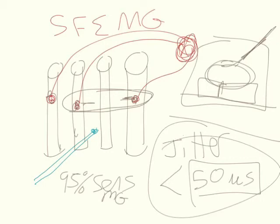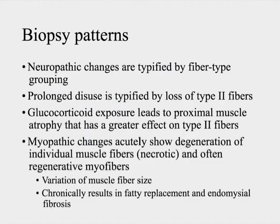The specificity of single fiber EMG is actually much lower because increased jitter can be seen in other neuromuscular pathologies. However, anytime you have myasthenia gravis you should always expect to see increased jitter, which is why the sensitivity is high.